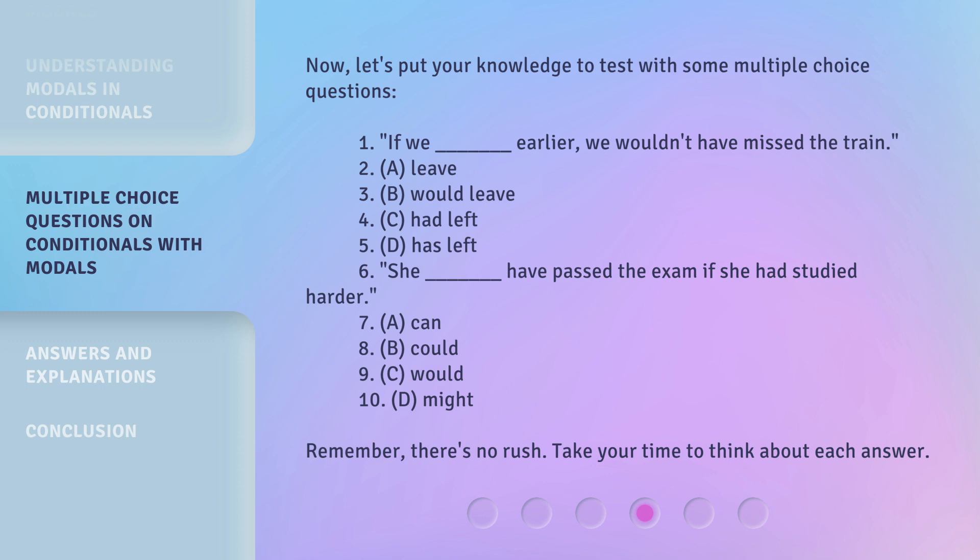Question 2: 'She _____ have passed the exam if she had studied harder.' A. Can. B. Could. C. Would. D. Might. Remember, there's no rush — take your time to think about each answer.